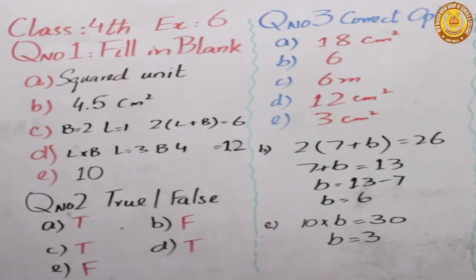Number c, perimeter of the rectangle equal to two length plus breadth. Length breadth, true, true.